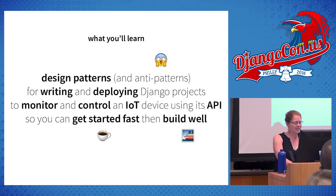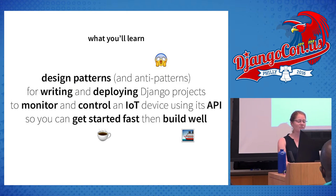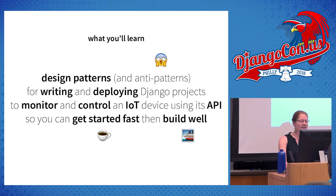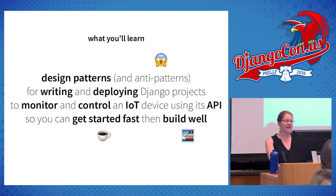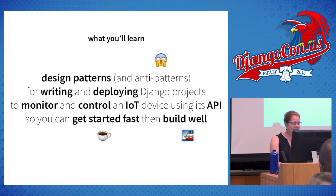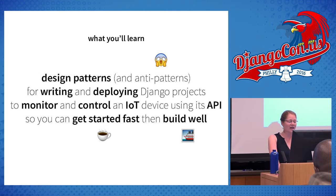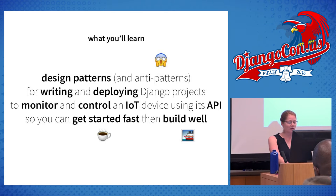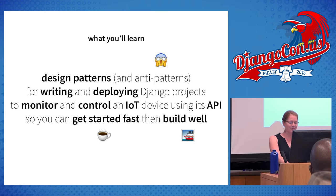Today we're going to talk about some design patterns that have worked for us at WattTime while writing and deploying Django projects that monitor and control Internet of Things devices using vendor-provided APIs. Some things will streamline your work for your next hackathon, and other things will help you as you move into production. As we go, I'll be using one emoji for hackathons, one for production, and one for anti-patterns to avoid.